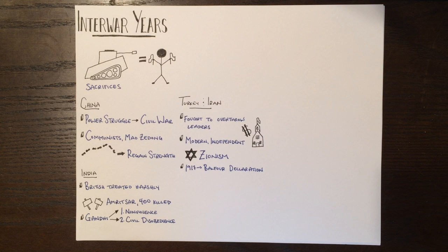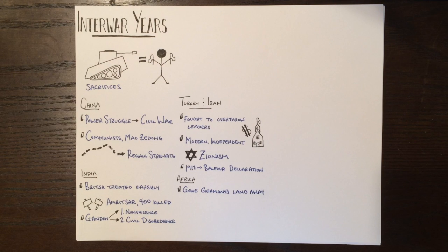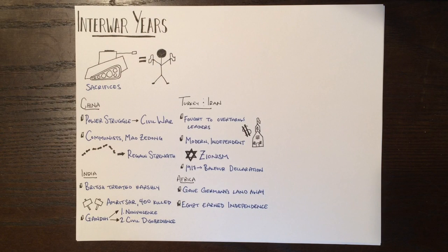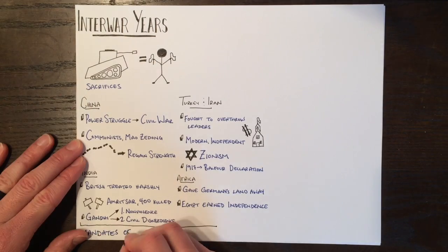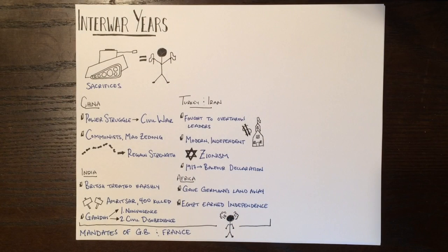In Africa, the land that Germany conquered during the war was given to other countries. Areas of fighting broke out, but only Egypt was able to successfully gain independence in 1922. After the war, all of these areas saw control from other, more powerful countries in what they called mandates. These mandates were to only be controlled until each country was able to lead themselves. Unfortunately, these mandates were just another name for colonies.